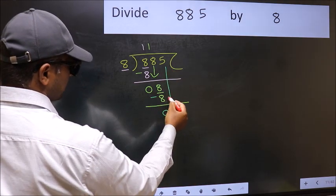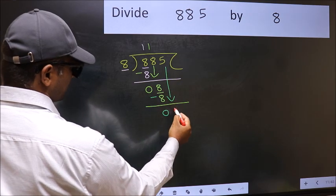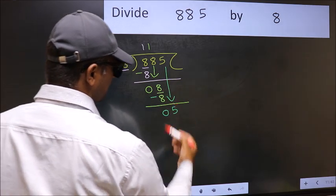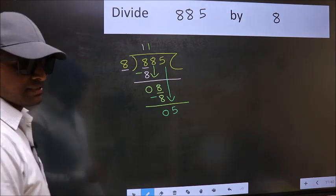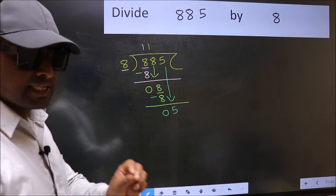After this, bring down the beside number. So, 5 down. After this step, the mistake happens. And the mistake is this.